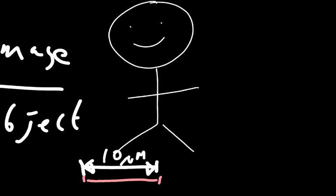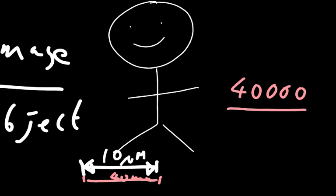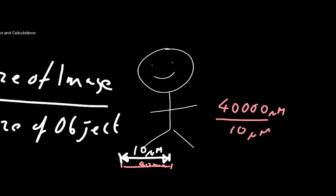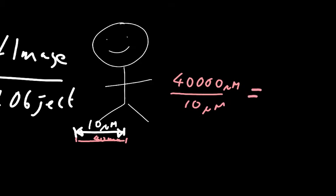Having measured it with the ruler, we worked out that this scale bar is 40 millimetres in length. The trick is always to put measurements into the smallest units you're using. A millimetre is 1,000 micrometres, so 40 millimetres is 40,000 micrometres. We divide by the size of the object — they've told us this object is 10 micrometres in length. So 40,000 micrometres divided by 10 micrometres gives us a magnification of 4,000 times.